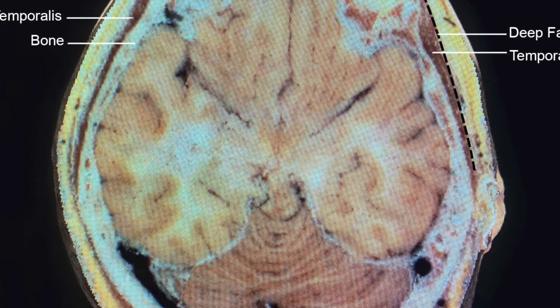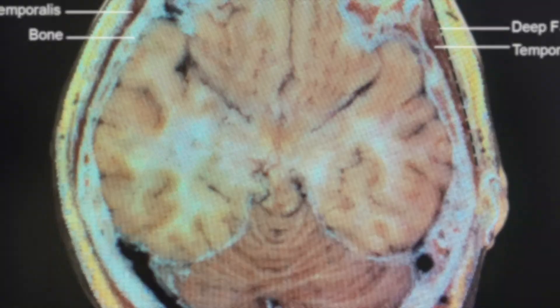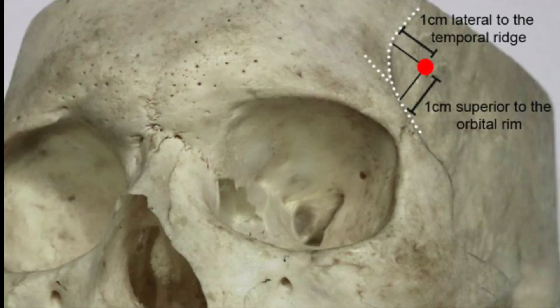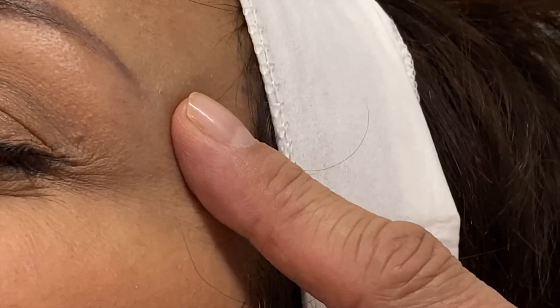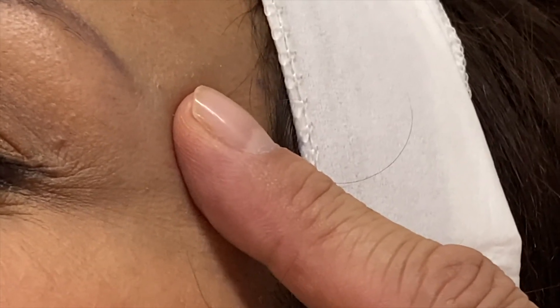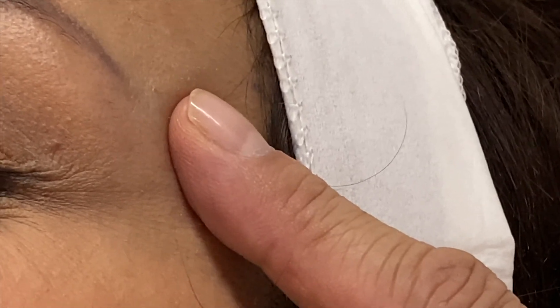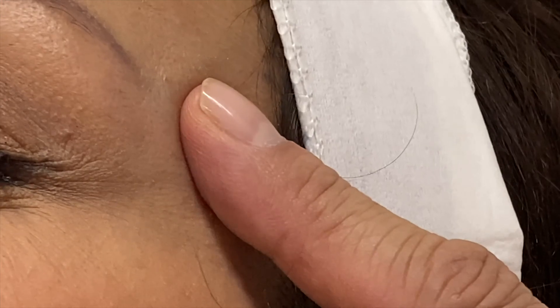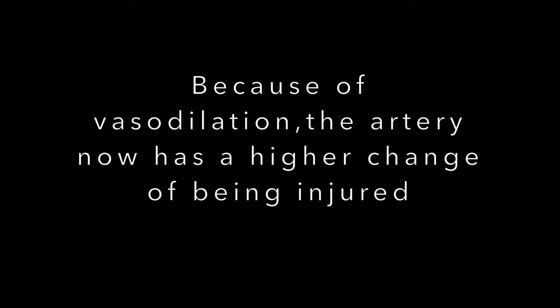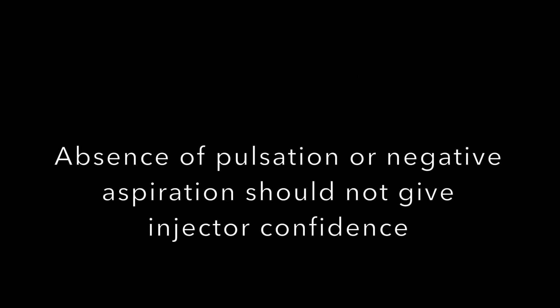This could be a challenge if a slightly larger than normal filler volume is required, and depending on the patient this may not be possible. Should one inject at possibly less than one centimeter — before the temporal bone curves away — a large amount of filler is trapped in a tight, confined space by the deep fascia, resulting in the patient complaining of pressure or headache. In an actual recorded case, the patient complained of pressure after the injection was withdrawn, and immediately after, one could see the pulsating artery. This means the artery vasodilated because of the pain, and because of vasodilation, the artery now has a higher chance of being injured. Absence of pulsation or negative aspiration should not give the injector confidence.